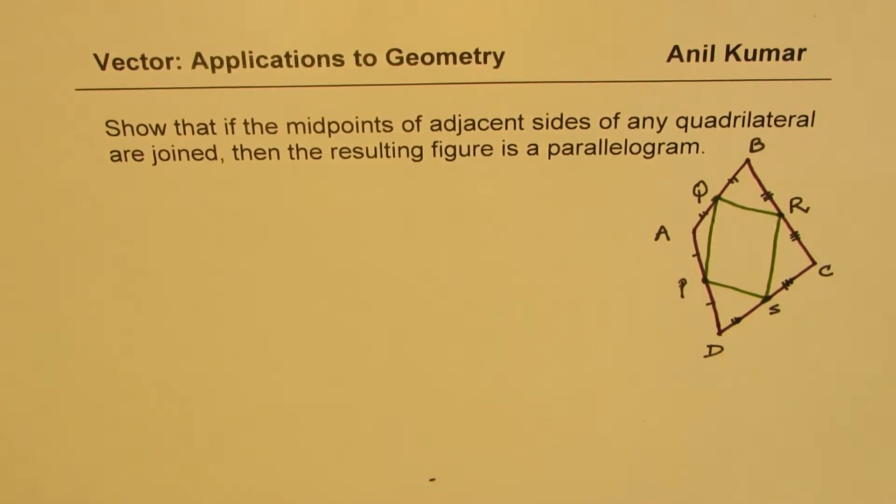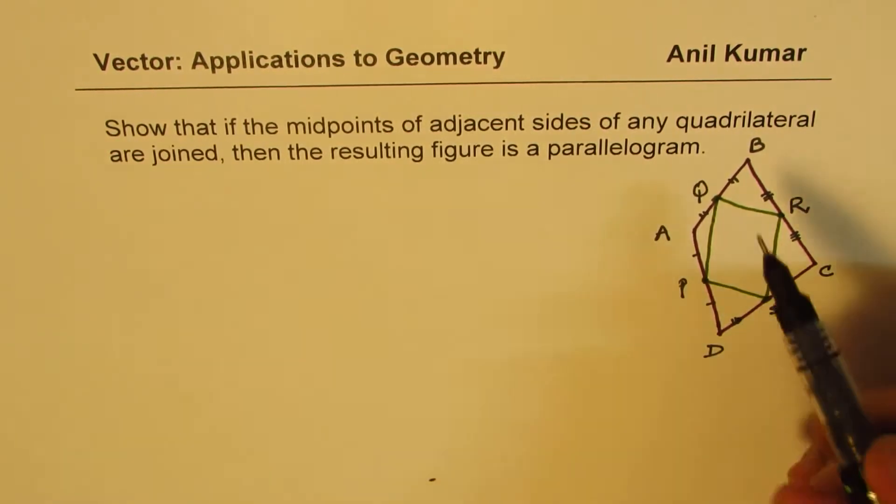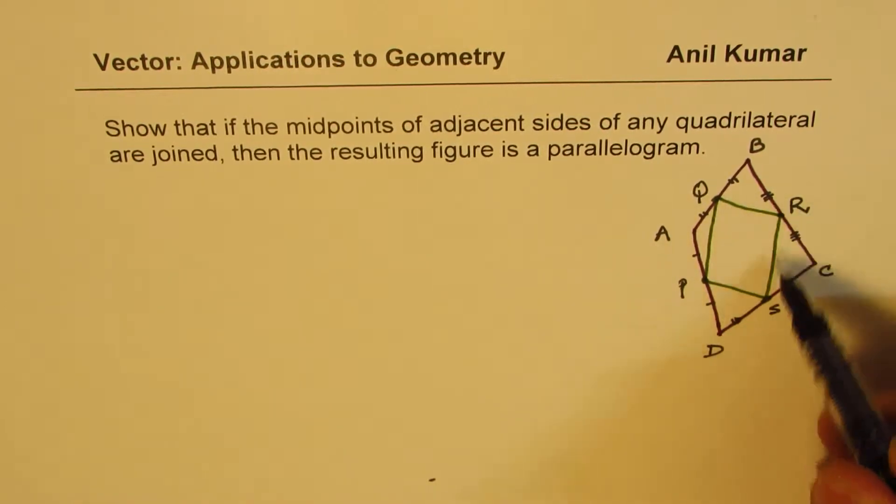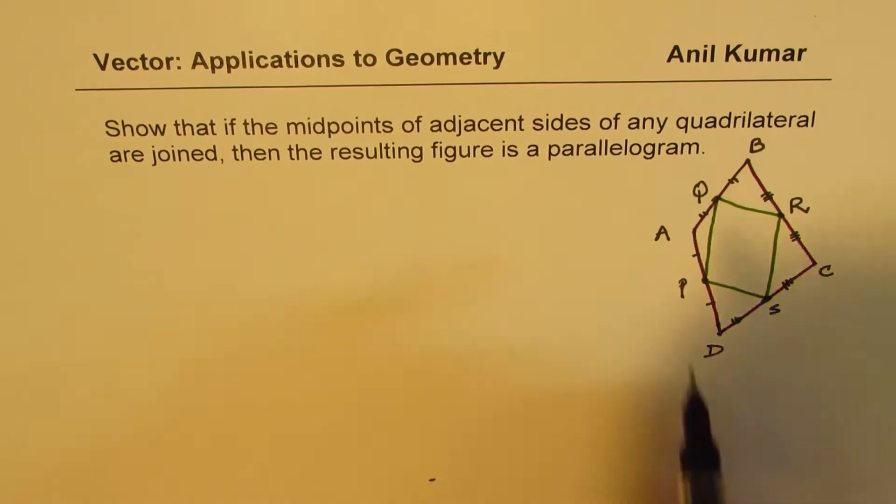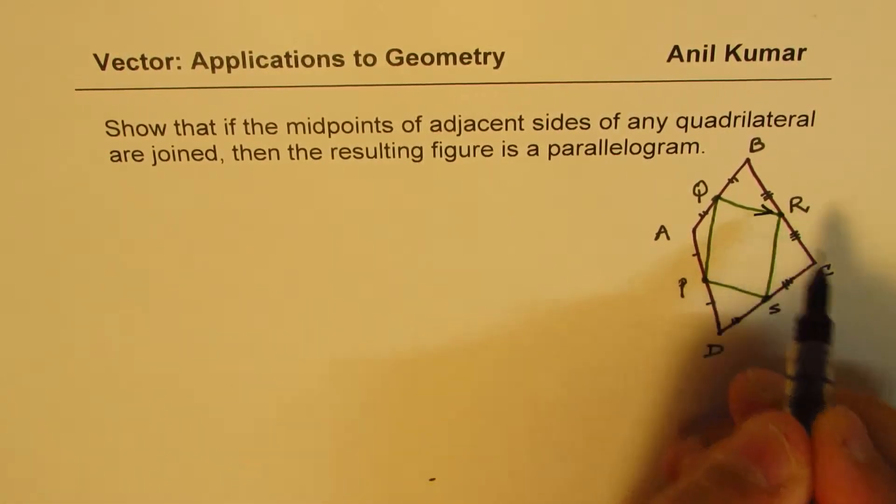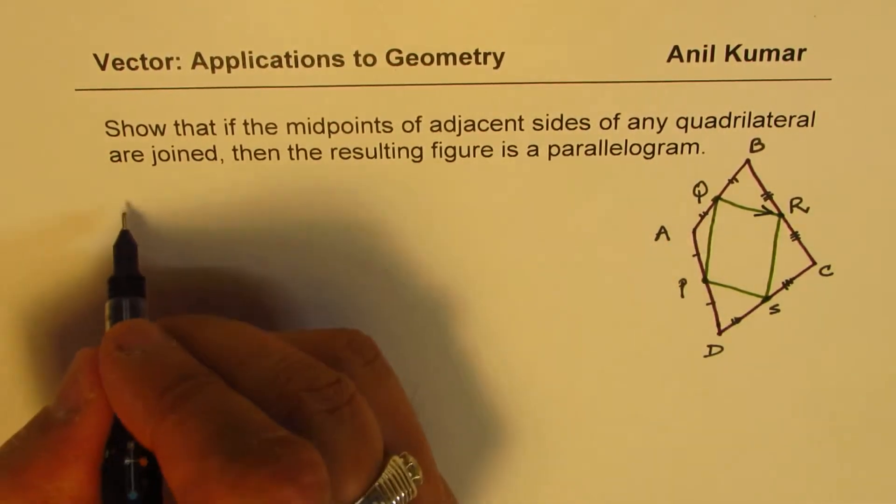These are the midpoints. Now, we need to prove that P, Q, R, S is a parallelogram. So the easy way to prove is that we can begin from any one side. So let's talk about Q, R. So what is Q, R equals to?